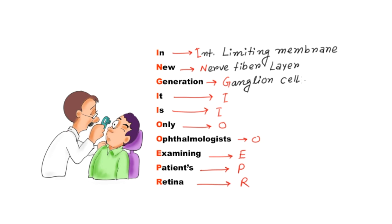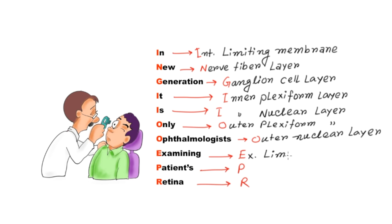N for nerve fiber layer, G for ganglion cell layer, I for inner plexiform layer, and again I for inner nuclear layer, O for outer plexiform layer, and again O for outer nuclear layer.